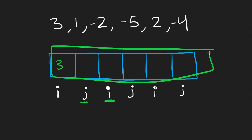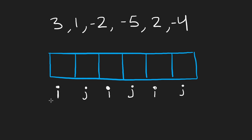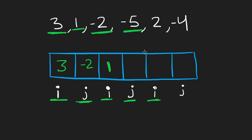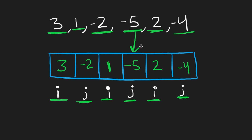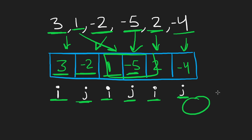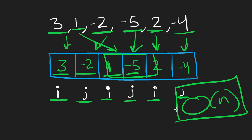With extra memory it works cleanly. Starting with two pointers i at position zero and j at position one in the result array, we walk through the input: positive three goes to index zero, positive one to index two, negative two to index one, negative five to index three, positive two to index four, negative four to index five. The result is correctly interleaved positive-negative, and relative order within each group is fully preserved.